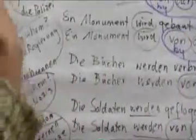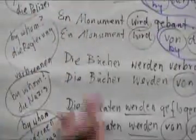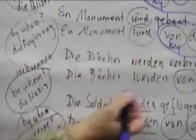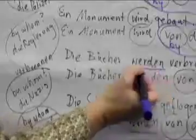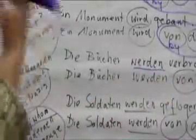The next example. Die Bücher werden verbrannt. The books are being burned. So here we have a plural, right? So we have werden. Die Bücher werden verbrannt.